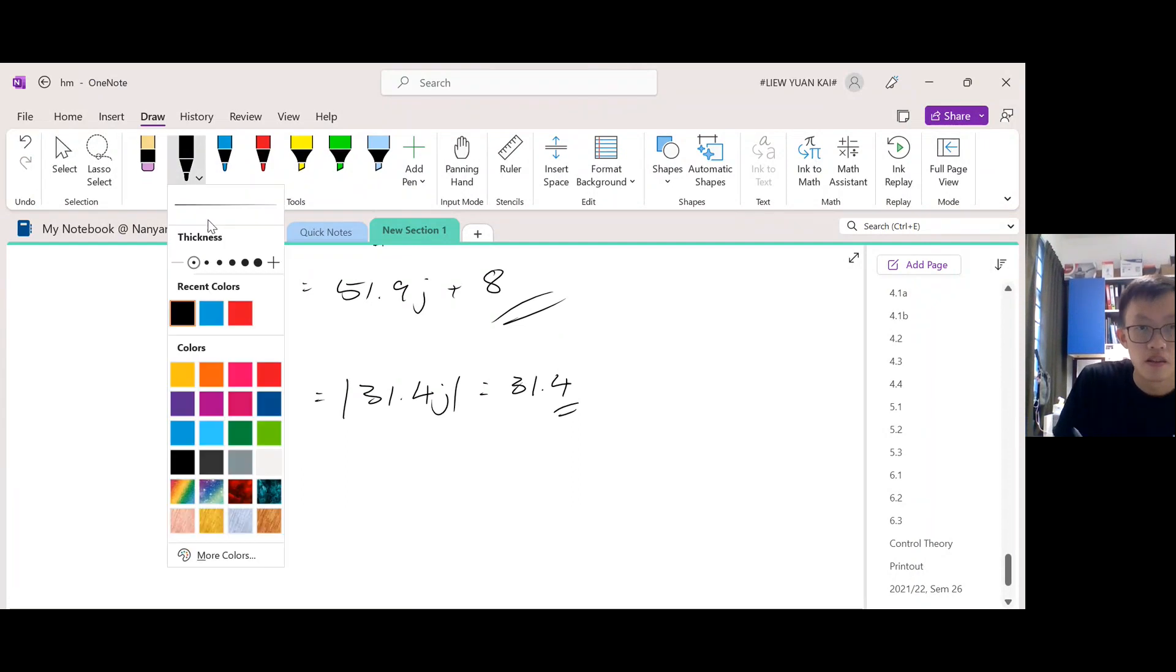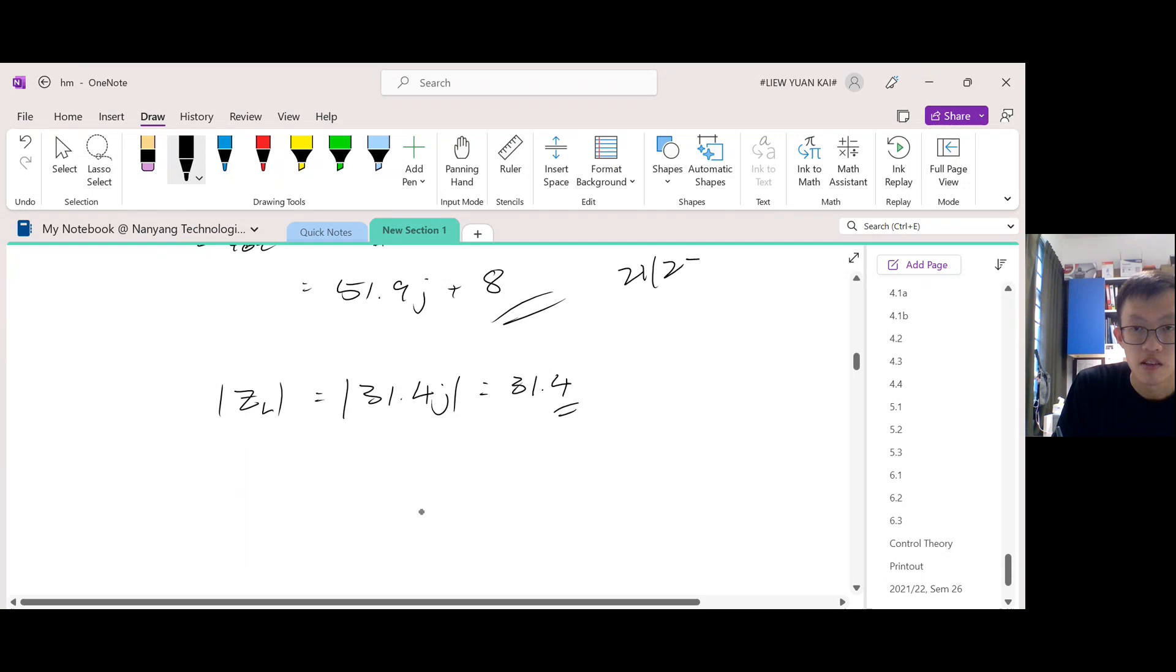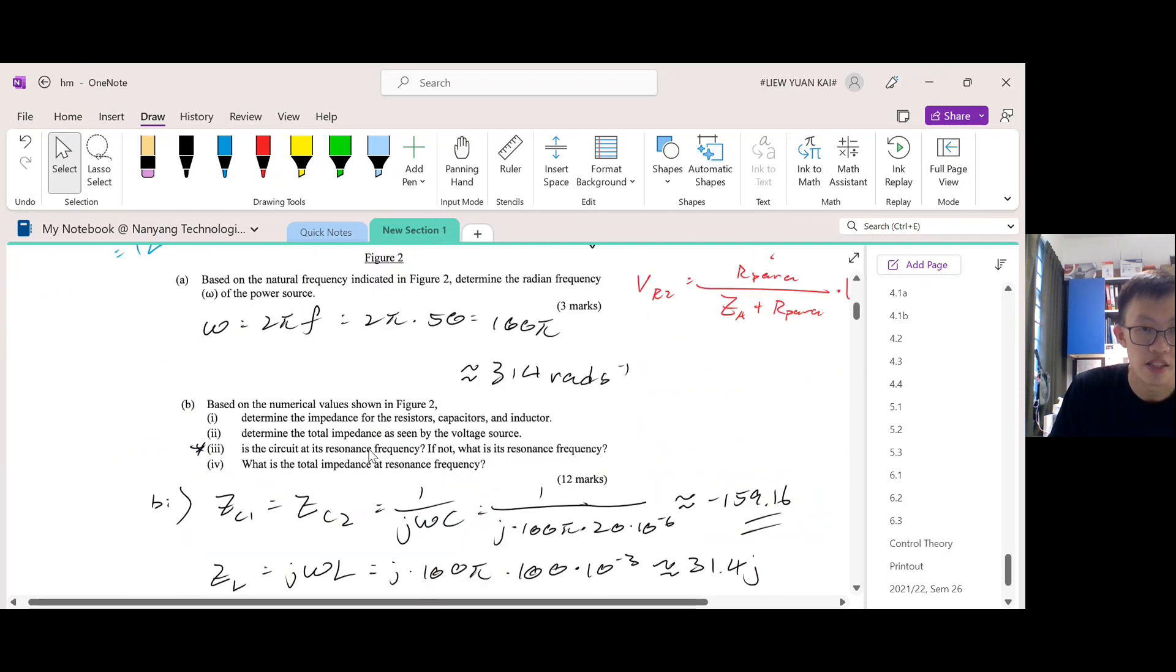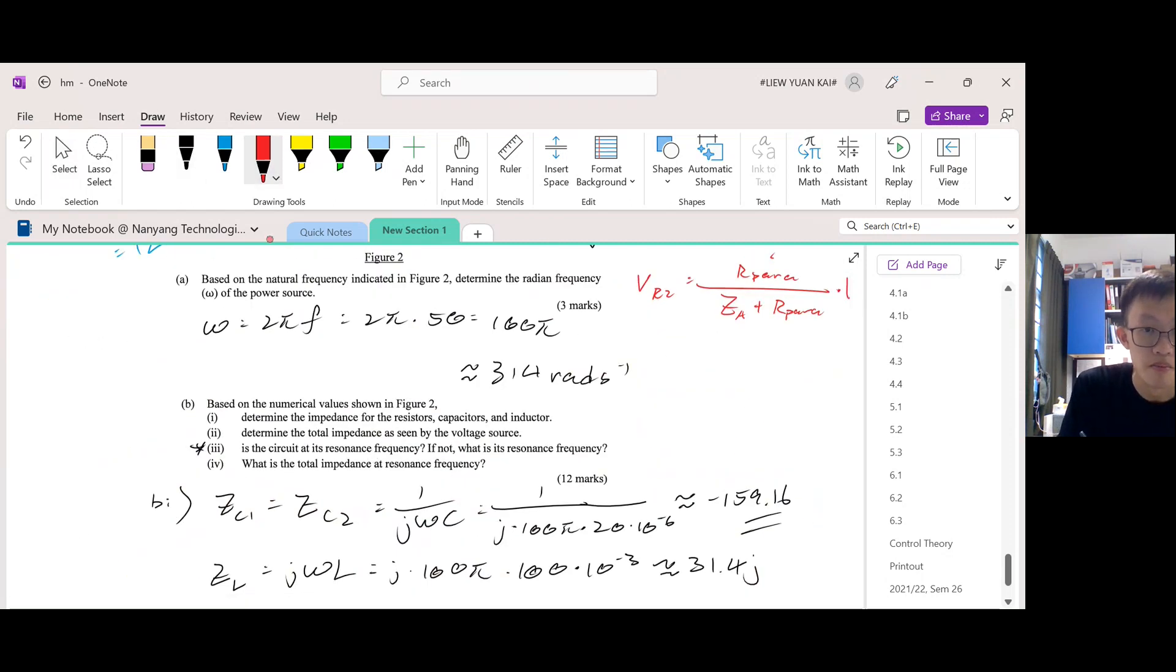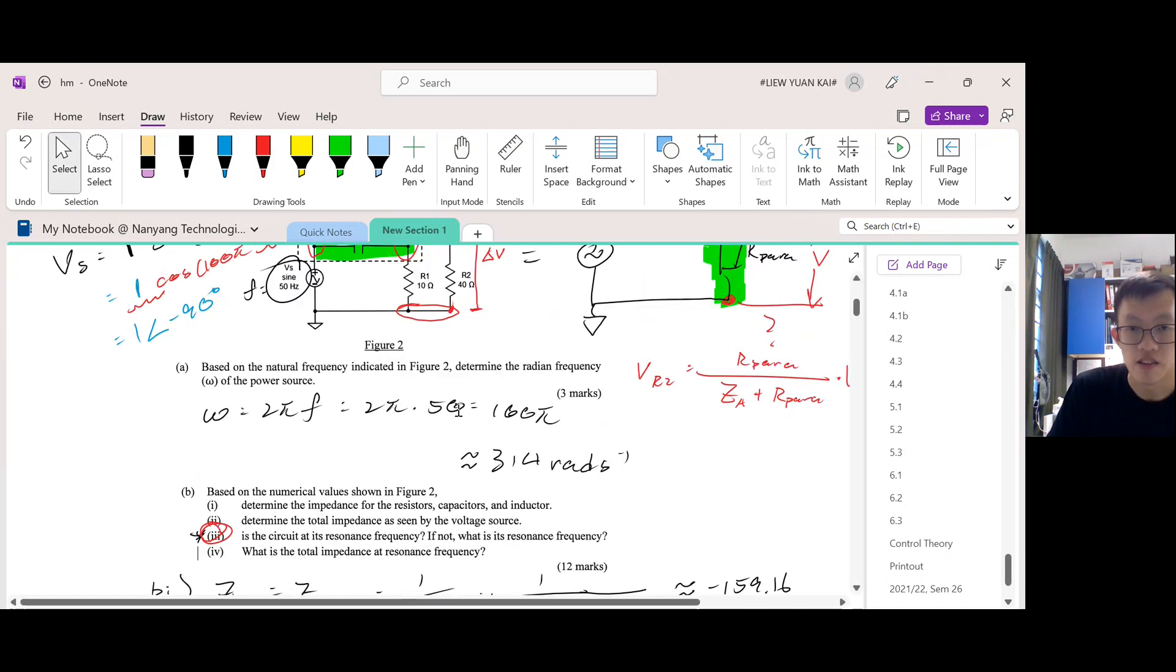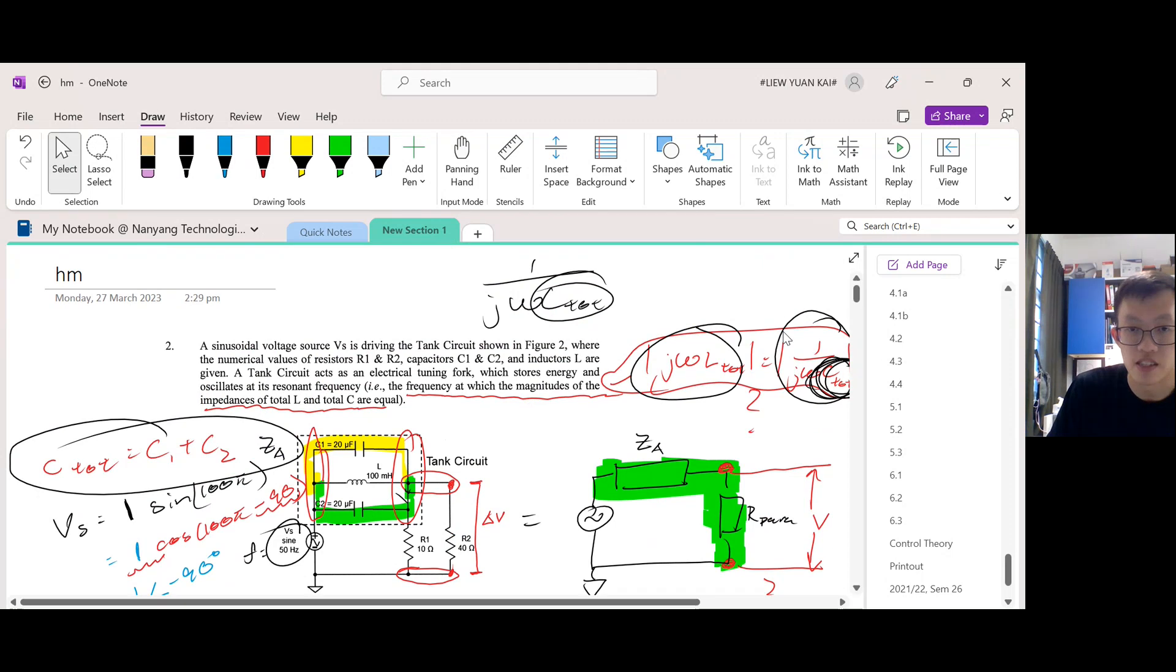Okay, so I realized I made a mistake in the PYP question which is 21-22 sem 2. The mistake was here in question B part 3. The circuit at resonance frequency - they told us that the condition for resonance frequency would be this.